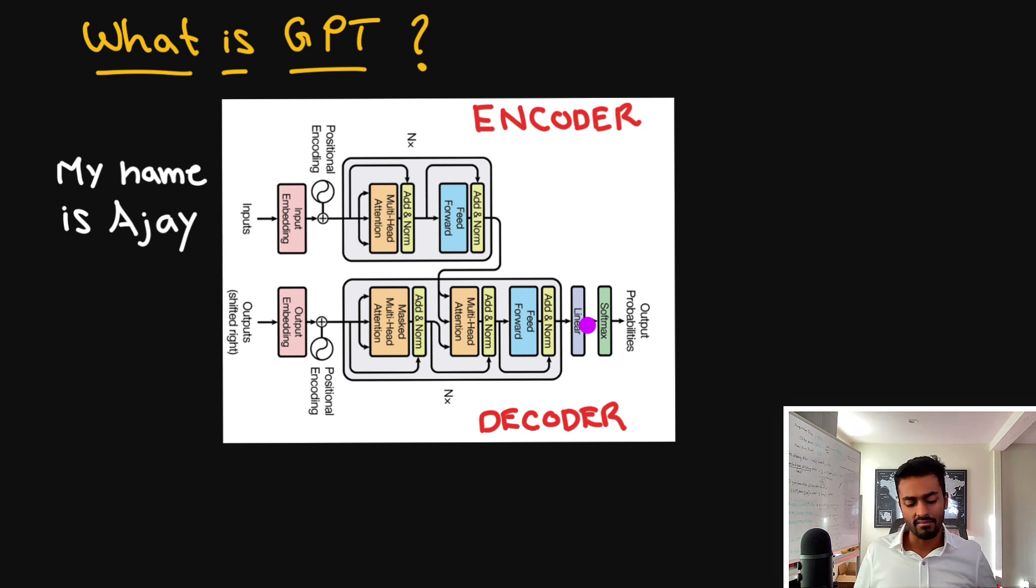So the source of GPT kind of comes from the transformer neural network architecture which was introduced in 2017 which was a sequence to sequence architecture so it would take as an input some sequence and it would output another sequence. Now in the field of natural language processing this can actually be super useful because sentences are a sequence of words and so we started to use these transformers for NLP problems like translation. The transformer architecture has two parts: it has an encoder and a decoder.